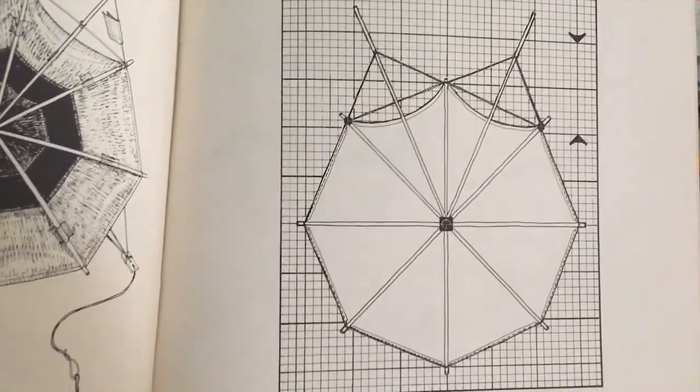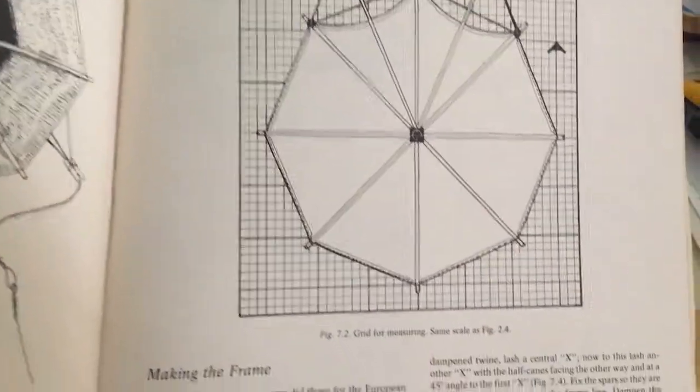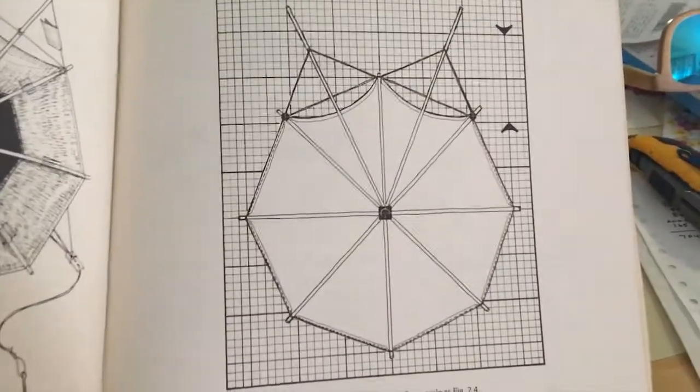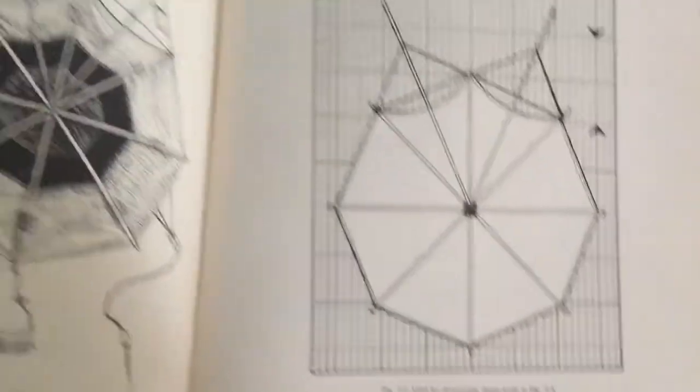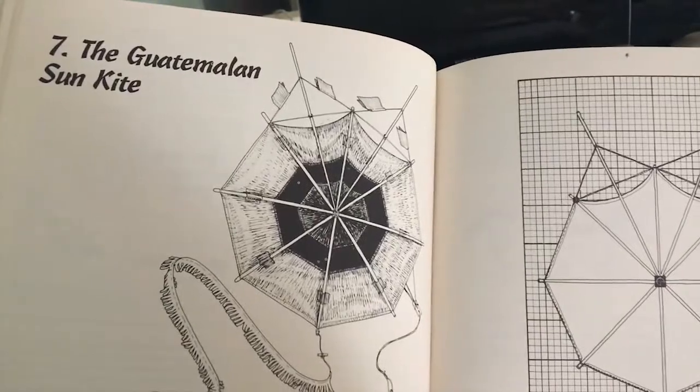They fly very nice, and I think a nice image would fit on that surface. I'm thinking probably something around two feet across would be nice—the Guatemalan Sun kite.